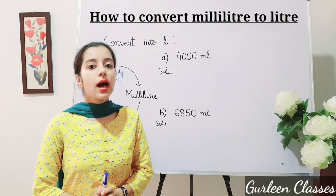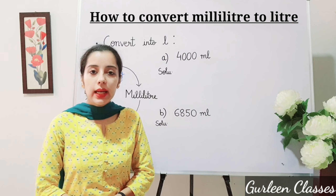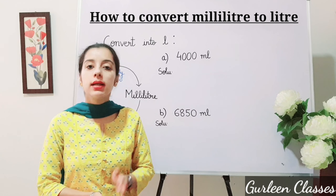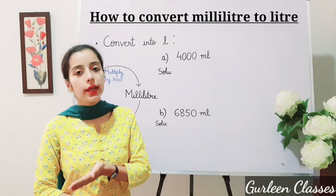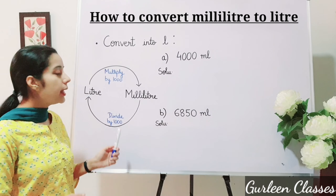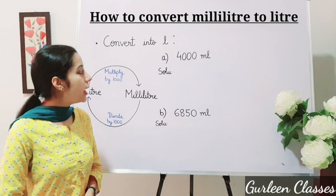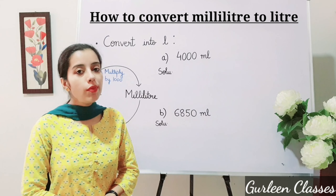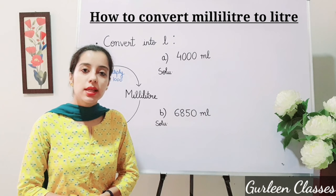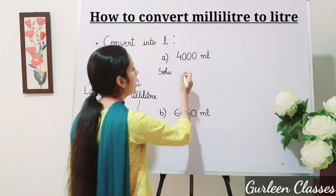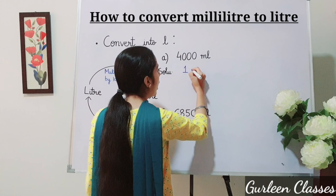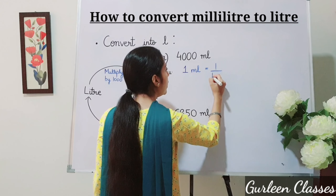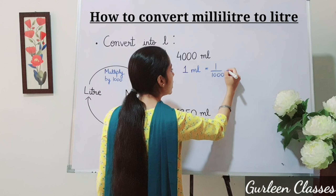Next, how to convert milliliter to liter? For converting a smaller unit to a bigger unit, we divide by one thousand. Part A: four thousand milliliter. We have to divide four thousand by one thousand. Write: one milliliter is equal to one upon one thousand liter.